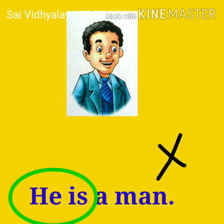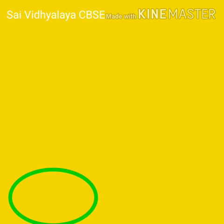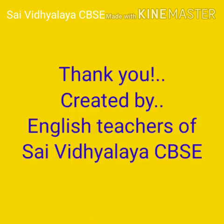The correct sentence is: he is a man. Is is used with he, she, it. Hope you all understood the concept. Thank you, children, for watching.